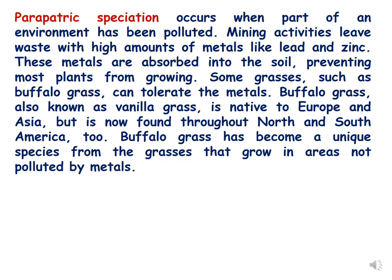Parapatric speciation occurs when part of an environment has been polluted. For example, mining activities leave waste with high amounts of metals like lead and zinc, which are absorbed into the soil and prevent most plants from growing. Some grasses such as buffalo grass — also known as vanilla grass, native to Europe and Asia but now also found throughout North and South America — can tolerate these metals. Buffalo grass has become a unique species from the grasses that grow in areas not polluted by metals. This concludes our discussion of speciation.